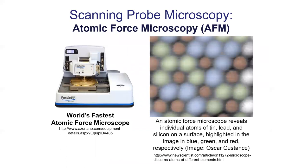Let's talk about how this is used in biology. There are different types of probe microscopy with different acronyms. The one that's gained the most popularity in biology is called the Atomic Force Microscope, or AFM. Same idea as any probe microscope — it's dragging a tip back and forth. Apparently this is the world's fastest atomic force microscope, though I've never actually used this technique.